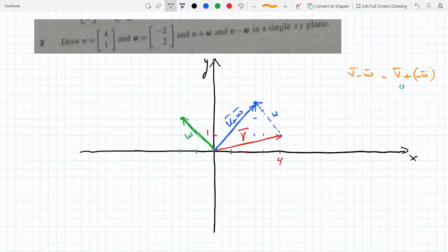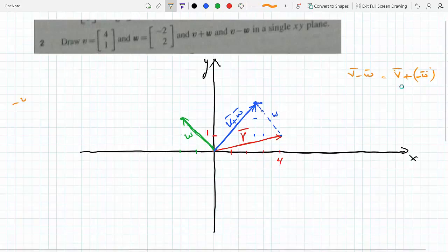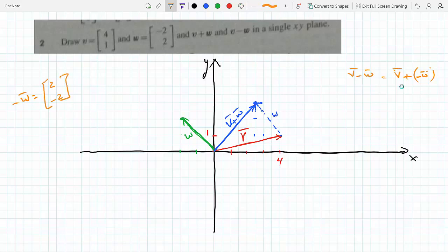I would switch the direction keeping the same magnitude. So instead of going (-2,2), I would go (2,-2). I multiply vector W by negative 1, so negative W becomes (2,-2). I would go 2 right, 2 down.